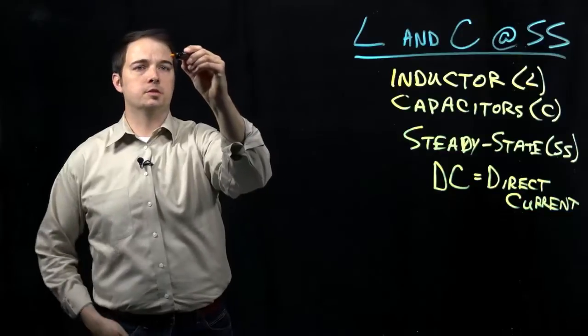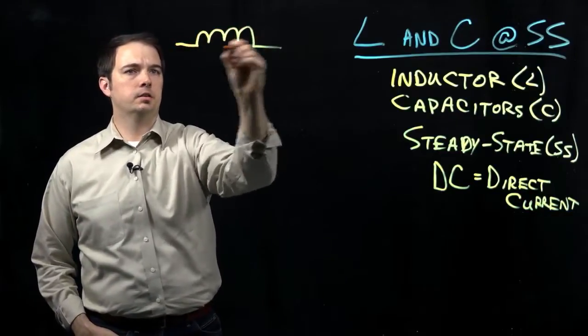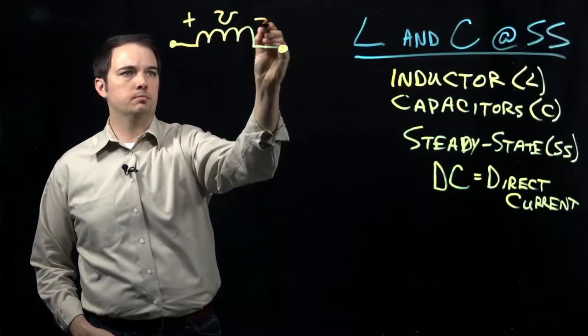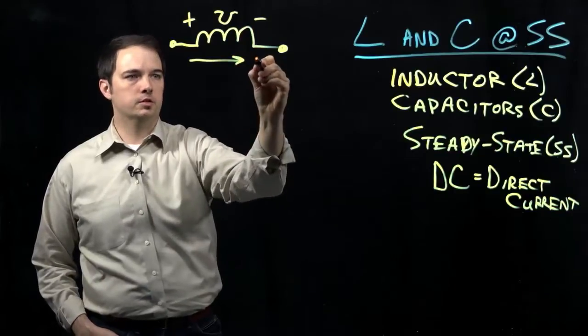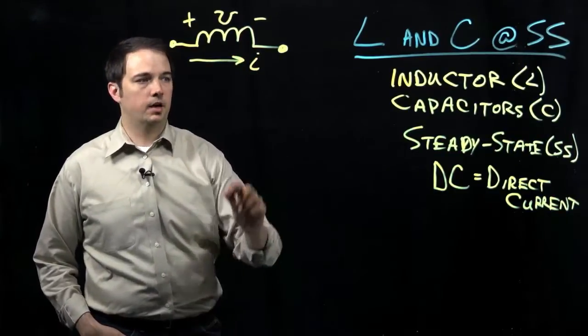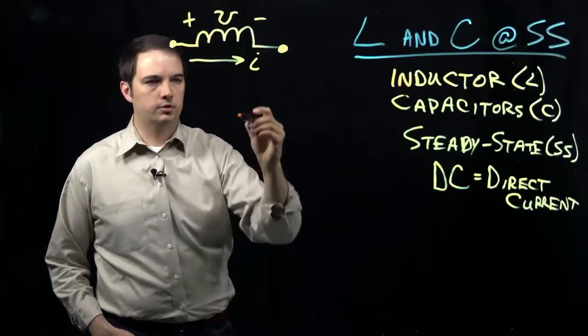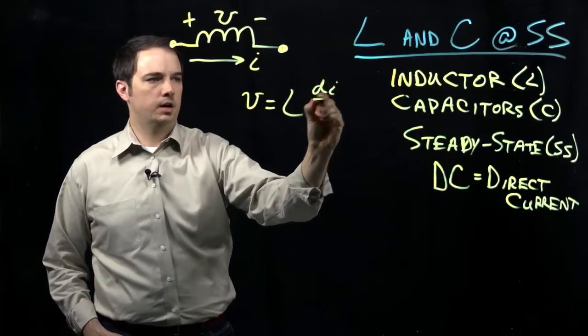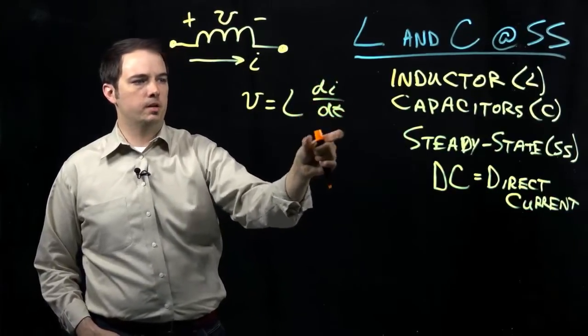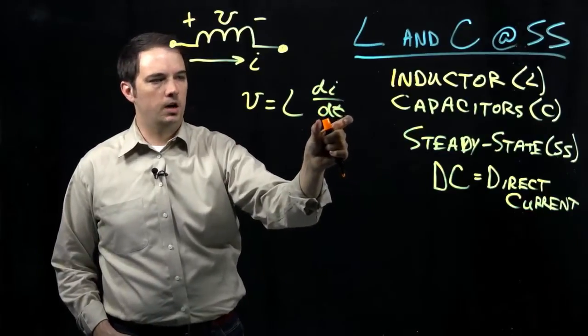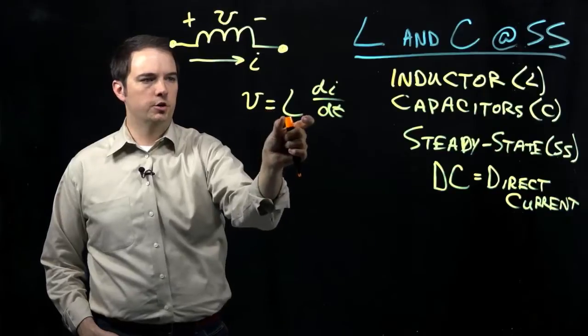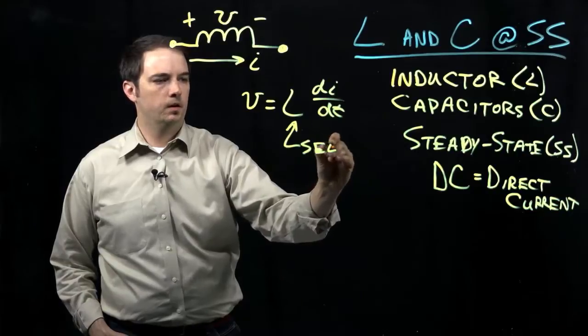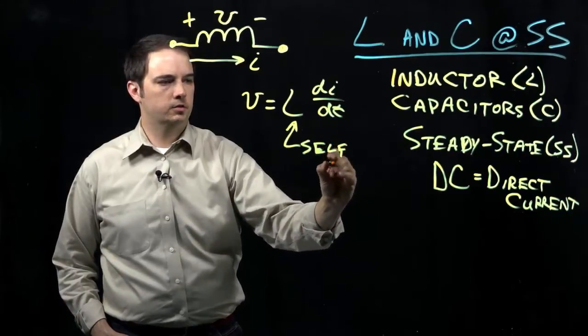So for the inductor specifically, here we indicate the schematic symbol that we have. If we indicate some voltage, plus to minus across here, it would indicate current flow in the same direction, current I in this case. We have defined how the voltage relates to the current through the expression V equals L times DI DT, where the change in current with respect to time tells us something about how the voltage is going to change through this term L, where this L specifically is the so-called self-inductance term of the inductor.